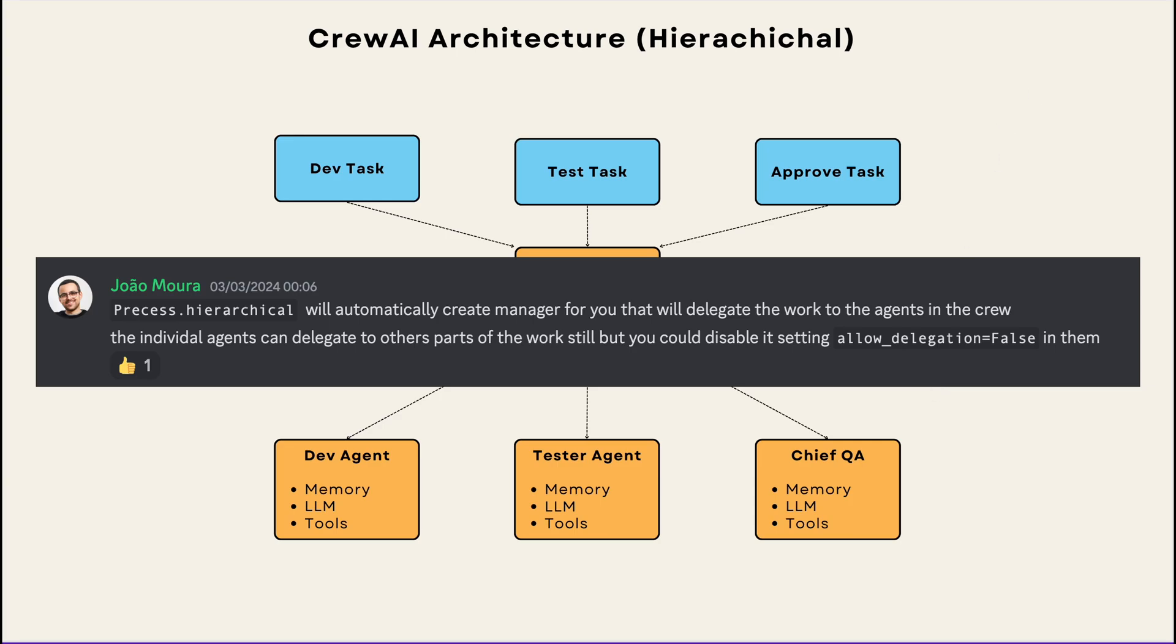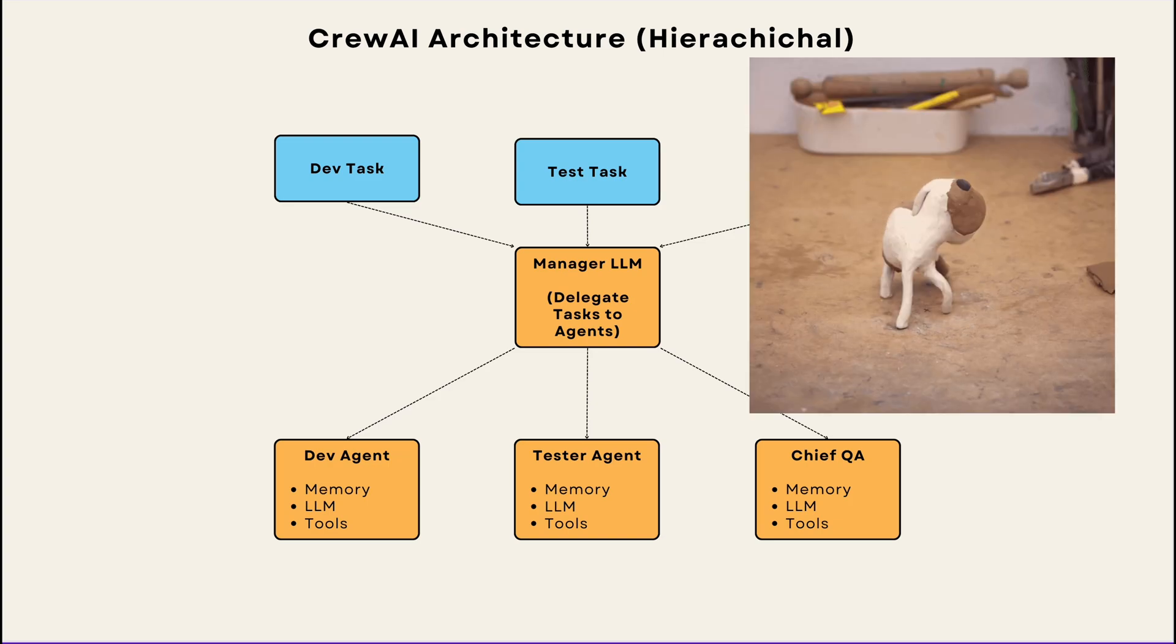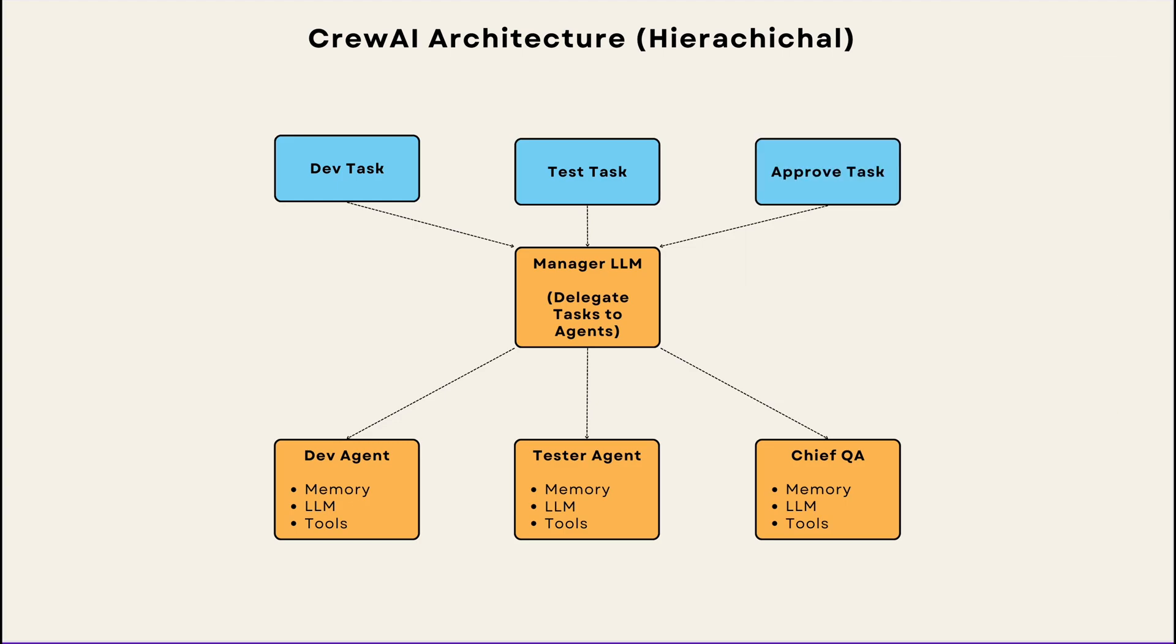But if it gets too messy, you can turn off the delegation for individual agents and let the manager take care of all the delegation for you. Multi-agent architectures are still fairly new, so I'm sure you will hit a lot of roadblocks and infinite delegation loops. But as we go into the future, you can expect things to get a lot better.